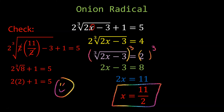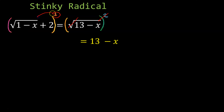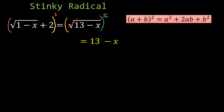Now what's NOT an onion? That's a stinky radical. Why? Because x is in more than one place and there are two radicals. Suppose you say, 'Can I just square both sides?' On the left hand side, squaring will undo the square root. On the right hand side you'd get 13 minus x. But can you distribute the square into each term of the binomial? No — you cannot do that. That is a binomial square, a perfect square.